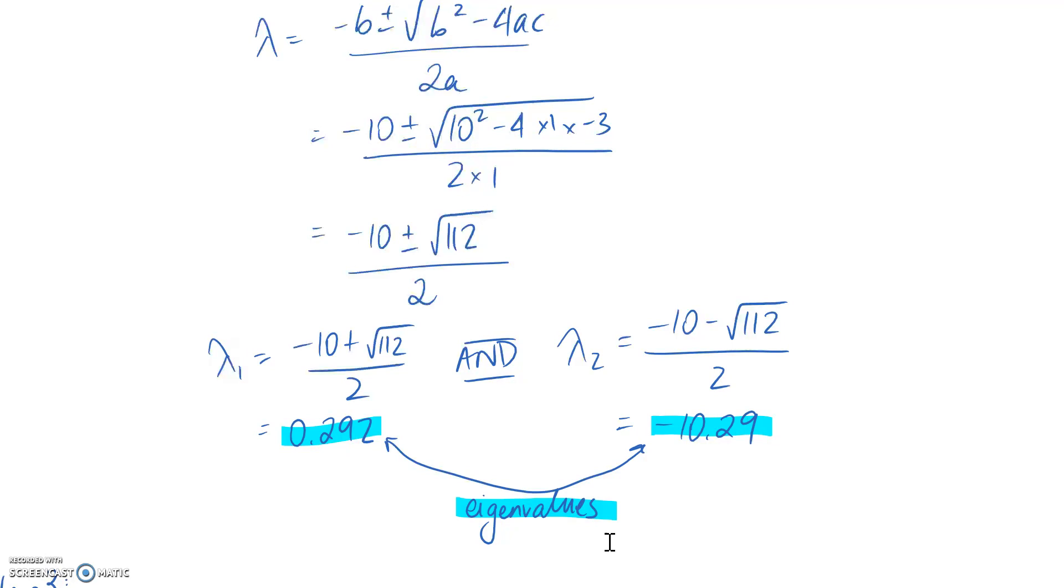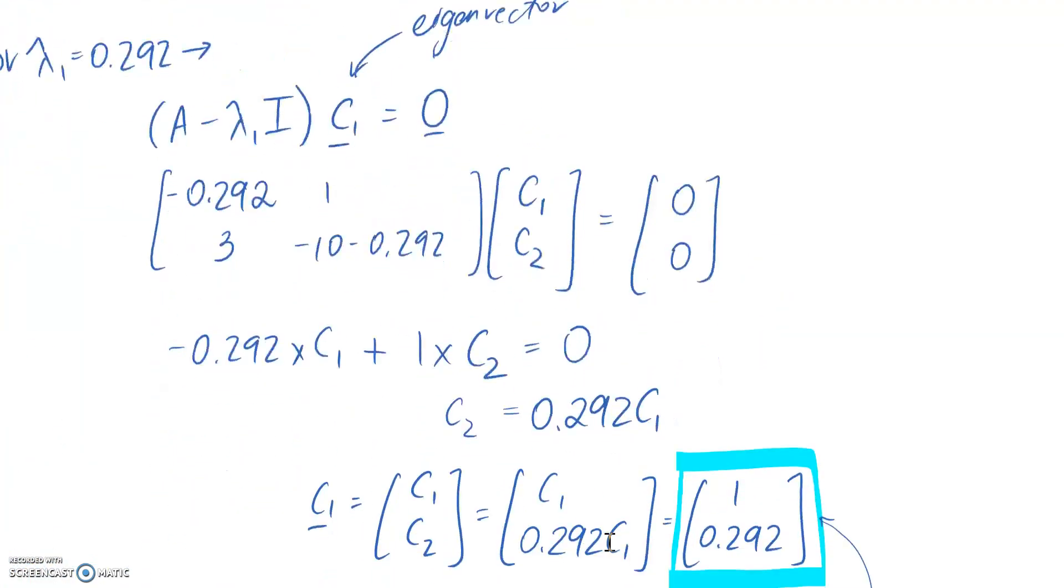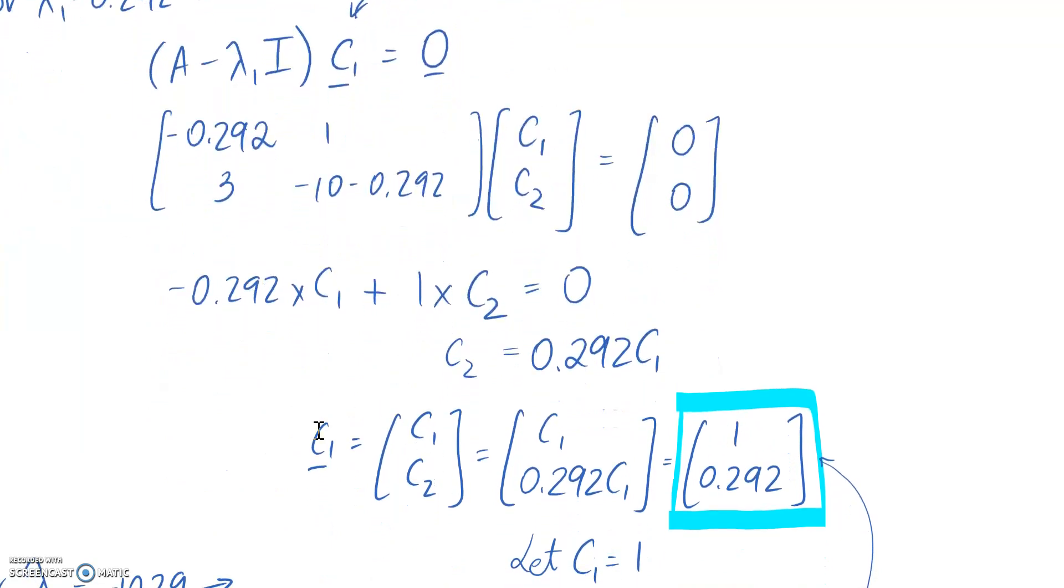So the next thing to try and verify is whether the eigenvectors actually are the same as what we got. And if we scroll down, we can see that the first eigenvector that we got, C1, was equal to 1 and 0.292.